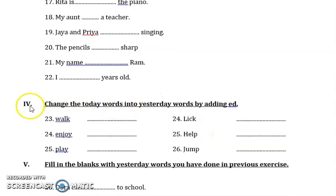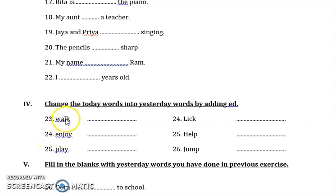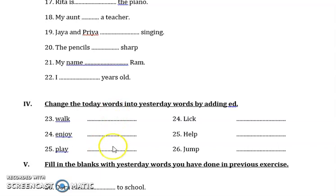Let's go for exercise four. Change the today words into yesterday words by adding -ed. Walk — walked. Enjoy — enjoyed. Play — played. In this, the action is completed in the past, so you just add -ed and write the verb.